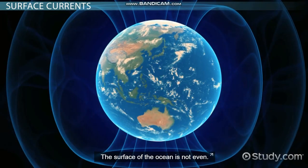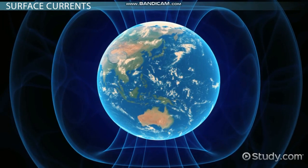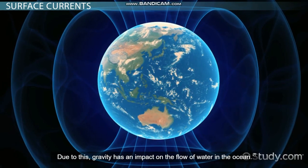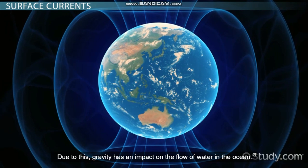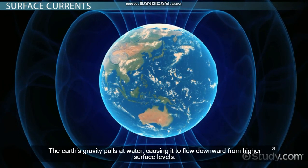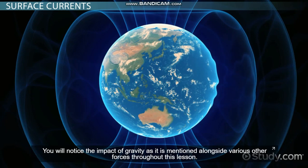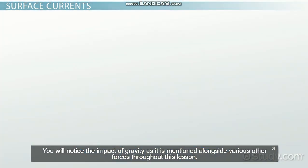Gravity. The surface of the ocean is not even. Due to this, gravity has an impact on the flow of water in the ocean. The Earth's gravity pulls at water, causing it to flow downward from higher surface levels. You'll notice the impact of gravity as it is mentioned alongside various other forces throughout this lesson.